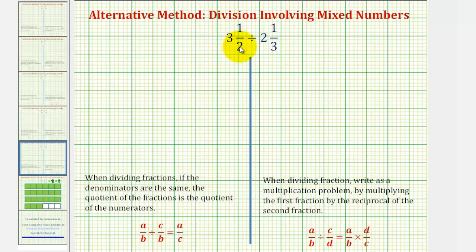We'll also find the quotient using the traditional method where instead of dividing, we multiply by the reciprocal. But the first thing we need to recognize is that we have to write the mixed numbers as improper fractions.